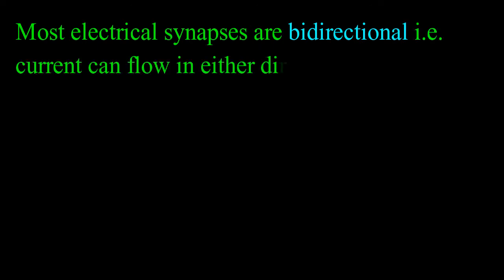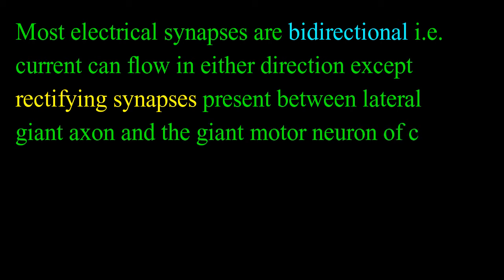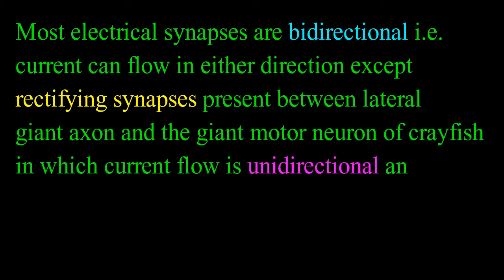Most electrical synapses are bidirectional, that is current can flow in either direction, except rectifying synapses present between lateral giant axon and the giant motor neuron of crayfish in which current flow is unidirectional.